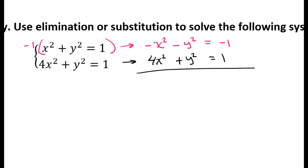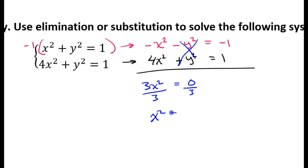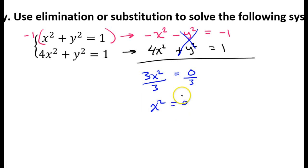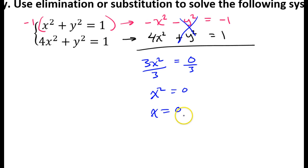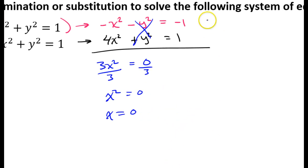Combining these equations, the y-squared terms cancel out and so do the constants, leaving 3x-squared equals 0. Dividing both sides by 3 gives x-squared equals 0, and taking the square root of both sides gives x equals 0.